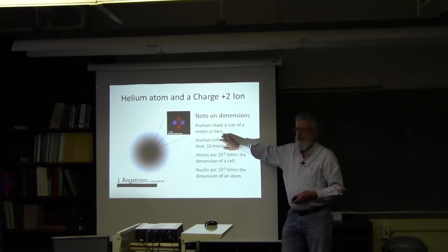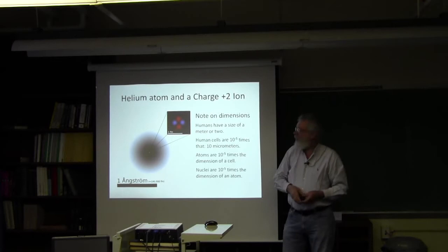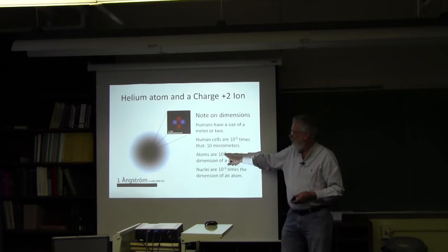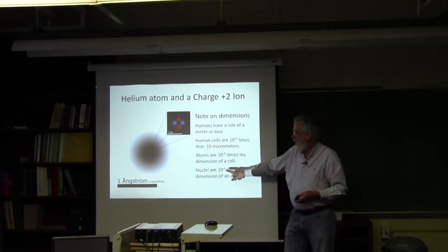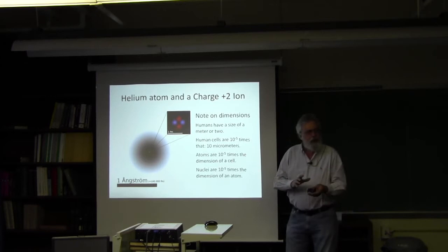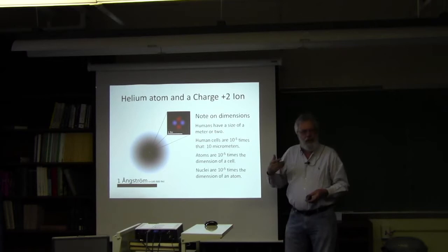Now human beings were on the order of meters in size. Human cells are about 10 to the minus five times that, 10 microns in diameter is the size of a cell in the human body. And if you go down another 10 to the minus five from there, you get the size of the atom. And if you go down another 10 to the minus five, you get the size of the nucleus. So there are huge dimensional differences of these various things. Humans to cells to atoms to nuclei each, 10 to the fifth difference.